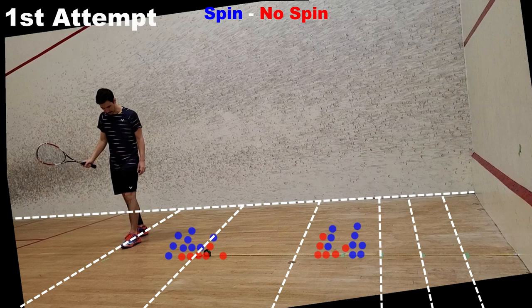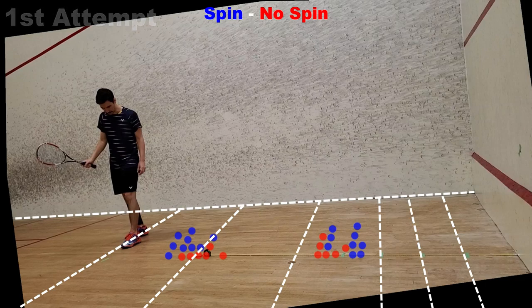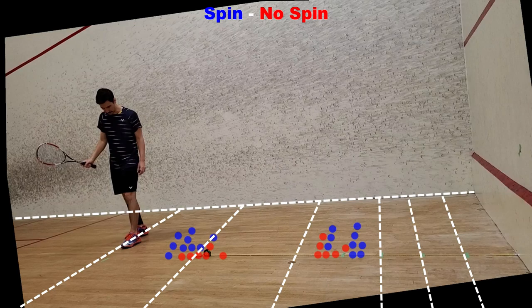So for my first set of experiments, I placed a target on the front wall. I only recorded measurements when the ball hit that target. The red dots throughout this video indicate a drop with no spin, and the blue dots indicate a shot with a lot of spin. The group of dots on the left represents where the ball landed on the second bounce, and the group of dots on the right are the first bounce.